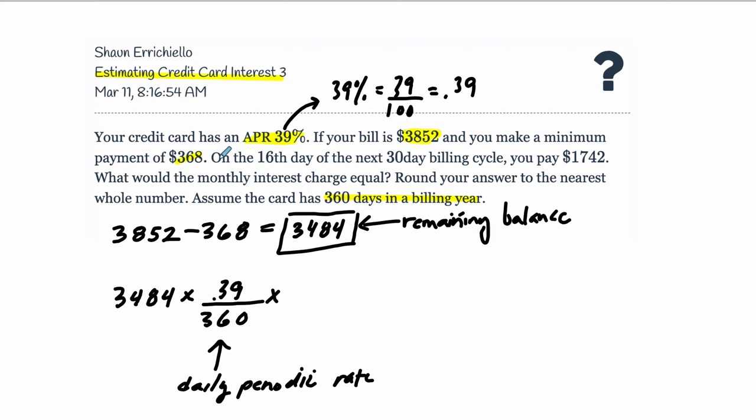And then that is our interest on our remaining balance every day in the billing cycle. And it says here on the 16th day of the next 30-day billing cycle, we pay some more off. We pay $1742. So that means on the 16th day, we're doing something different. But this interest rate sticks for the first 15 days of our billing cycle.